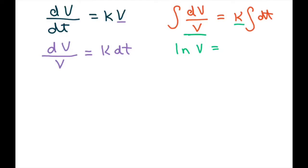And for this, you're just going to write kt, because the antiderivative of dt is t. And then we have to put our plus c.